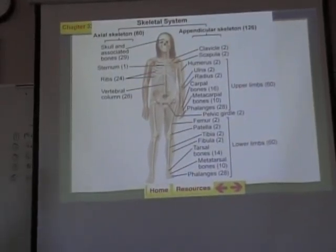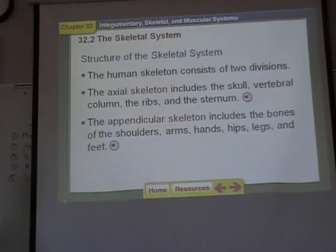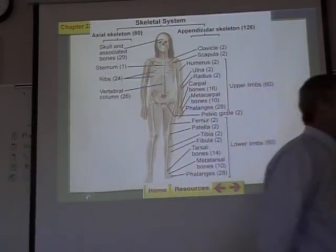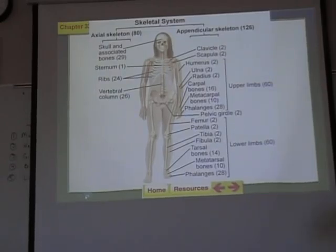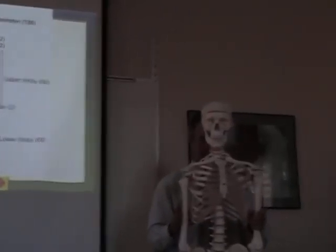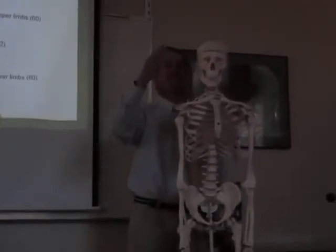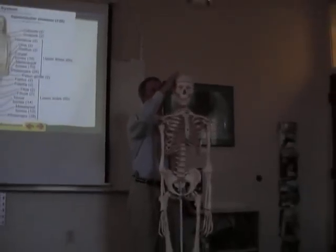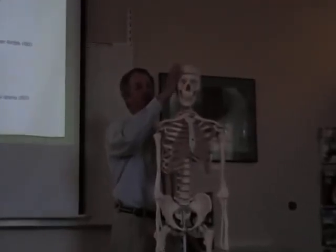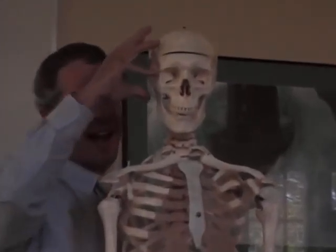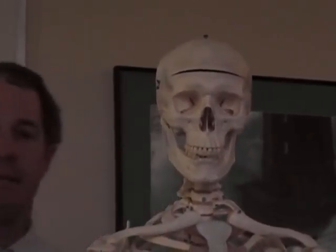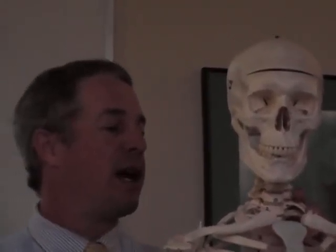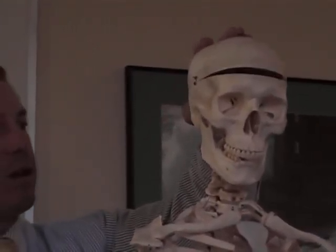Here are all the bones in the body. I happen to have a skeleton up here. This skeleton has a name — Fred. You have your cranium, the bones of the skull and the face. There are 22 of them, and they've kind of grown together over the formation. If you ever take an anatomy class in college, you will have to learn all these names of the bones.